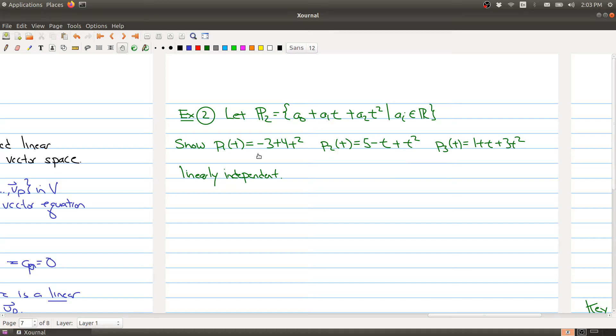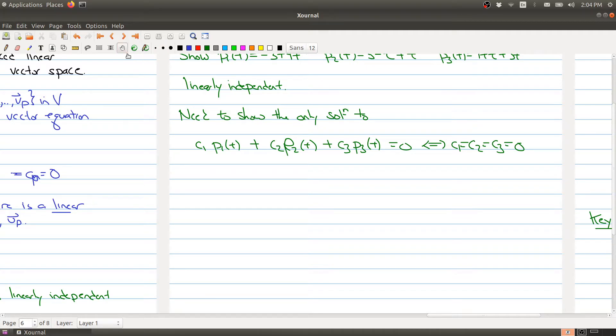Here I have a vector space P_2 consisting of all the polynomials of degree 2 or less. And I have three polynomials: minus 3 plus 4t squared, 5 minus t plus t squared, and 1 plus t plus 3t squared. What I want to do is show that these vectors are linearly independent. So it's good to just write out the definition if you're getting stuck. We need to show the only solution to C_1 times the first polynomial plus C_2 times the second polynomial plus C_3 times the last polynomial equals 0 is when C_1, C_2, and C_3 equals 0. So this is our goal, to show that if we found three numbers that allowed us to scale each of these polynomials and then add them and we got 0, that means that all of our numbers had to be 0 to begin with.